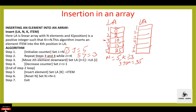We have to move the jth element downwards — that is, move the element at index LA of j into LA of j plus 1. j is 5, and 5 plus 1 is 6, so LA of 6 is equal to LA of 5. The element at the 5th index is shifted to the 6th index. Then decrease j by 1: j equals j minus 1, so now j is equal to 4.